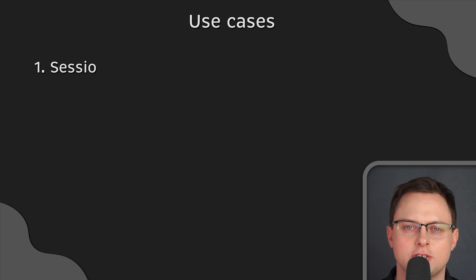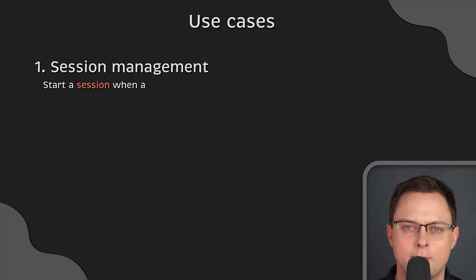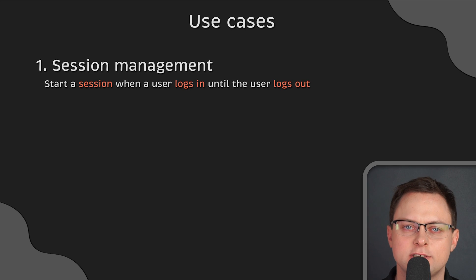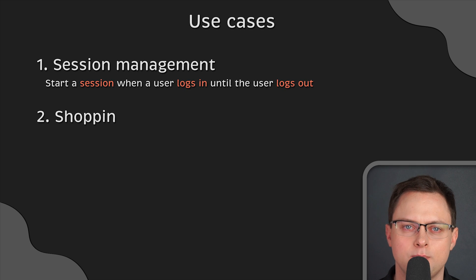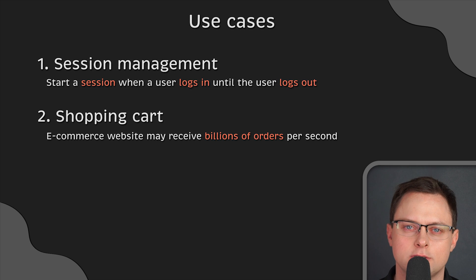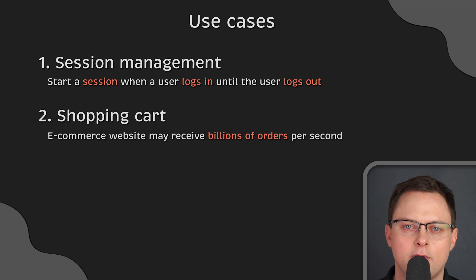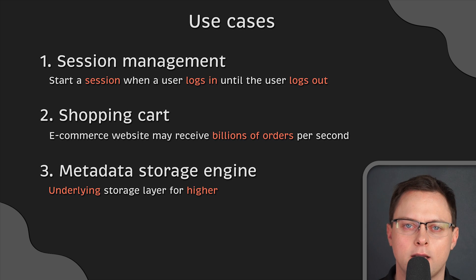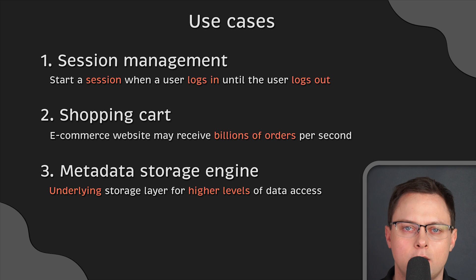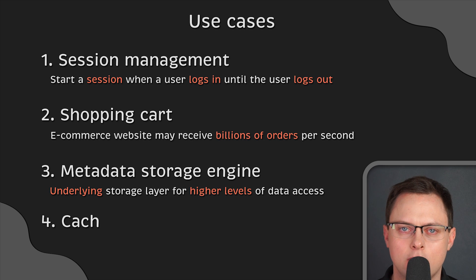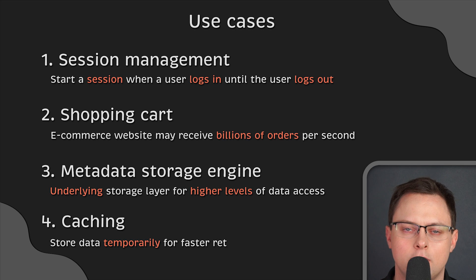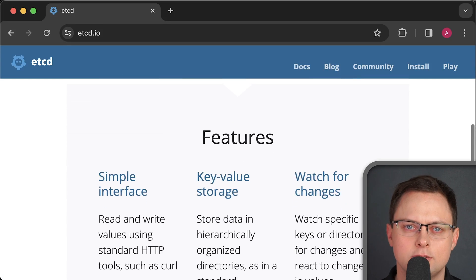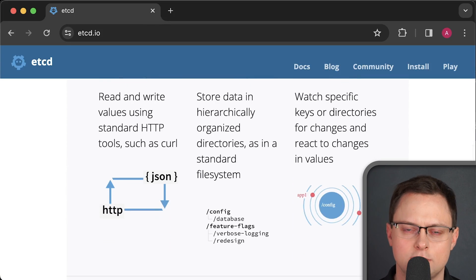Use cases for key-value databases include: session management — session-oriented applications like web apps start a session when a user logs in and keep it active until logout or timeout; shopping cart — e-commerce websites may receive billions of orders per second during holiday seasons, requiring a high-performance database; metadata storage — your key-value store can act as an underlying storage layer for higher levels of data access; and caching — storing data temporarily for faster retrieval. If you need a reliable key-value database, you can take a look at etcd. Kubernetes uses etcd to store all its cluster data, such as pods, deployments, and services.